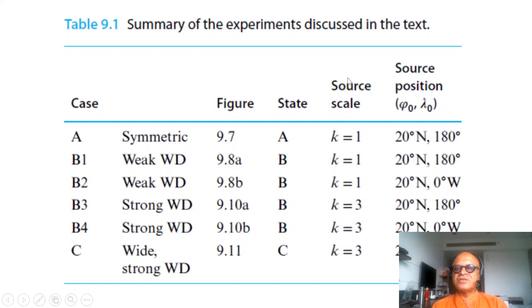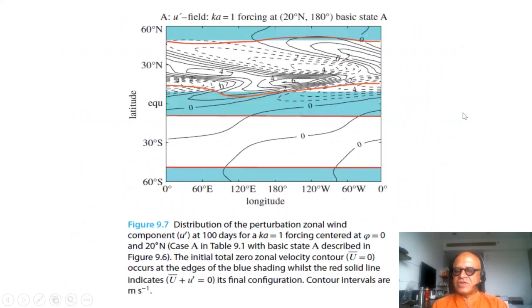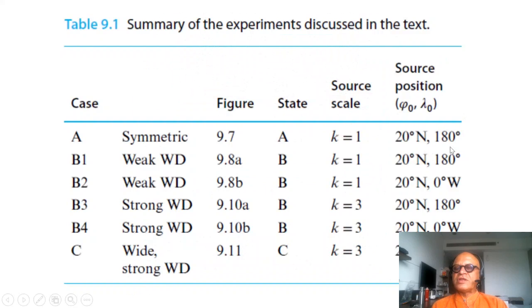At various locations like 20 north Dateline, 20 north Greenwich Meridian and so on with different wave numbers to see if there is any particular wave number and location that makes a more efficient penetration into the tropics of the perturbation from extra tropics.